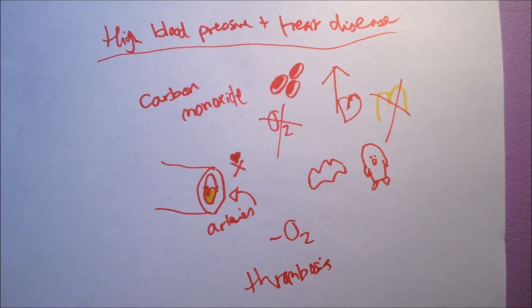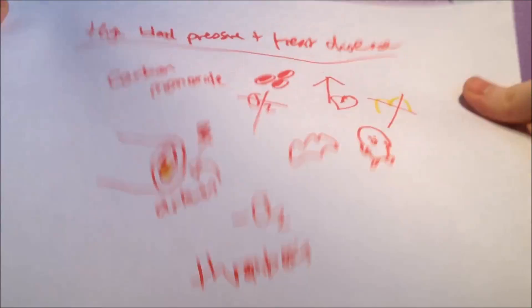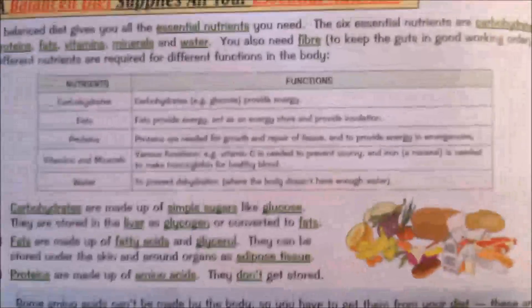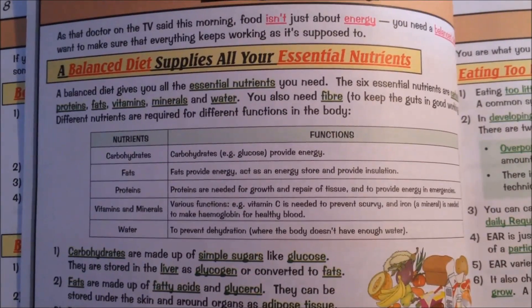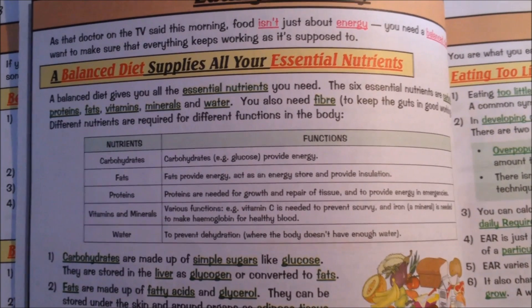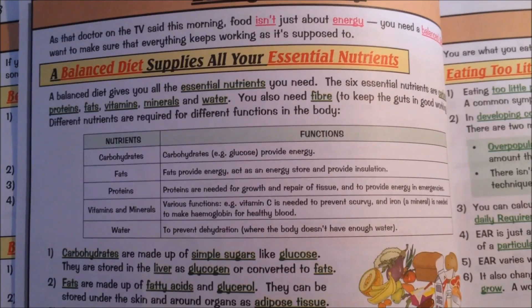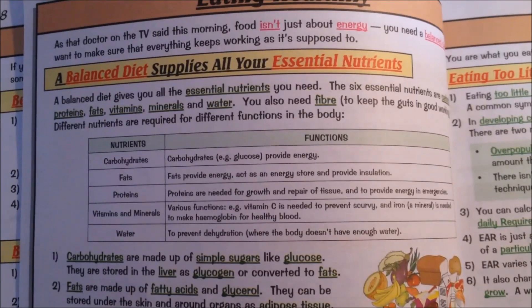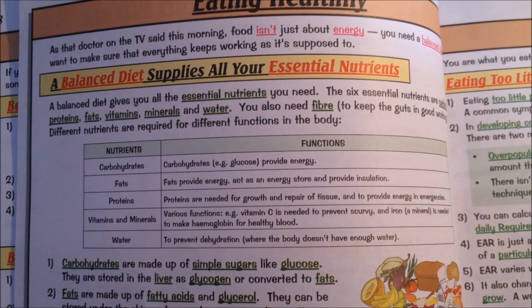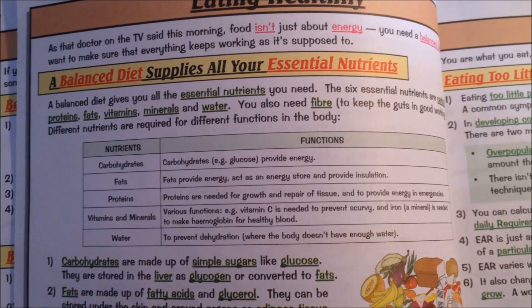Next section: eating healthily. A balanced diet supplies all your essential nutrients. I'll show you the table because it's easier than drawing it and you might actually be able to read it. Carbohydrates, for example glucose, provide energy. Fats also provide energy and act as an energy store, providing insulation. Proteins are needed for growth and repair of tissue and to provide energy in emergencies. Vitamins and minerals, for example vitamin C is needed to prevent scurvy. Iron is needed to make hemoglobin for healthy blood, which is why you don't smoke. Water is to prevent dehydration.